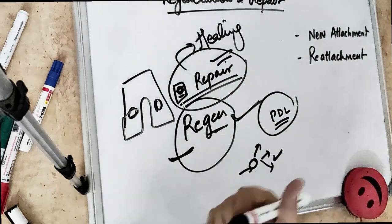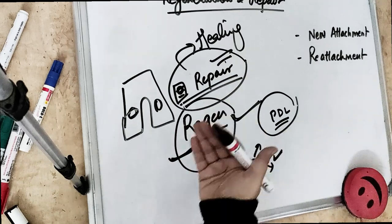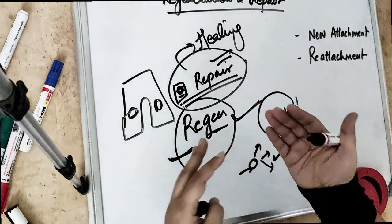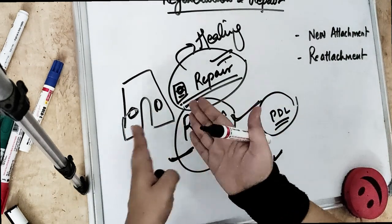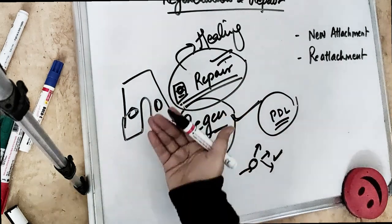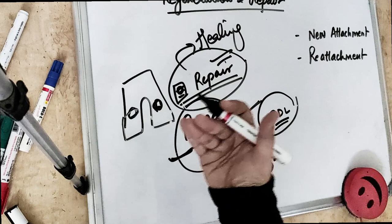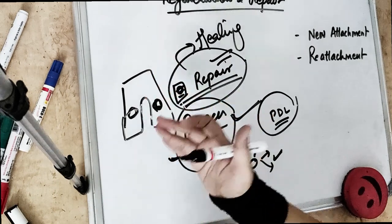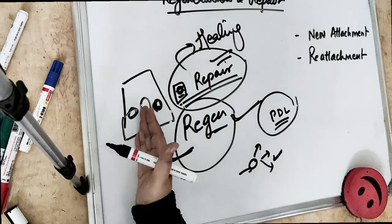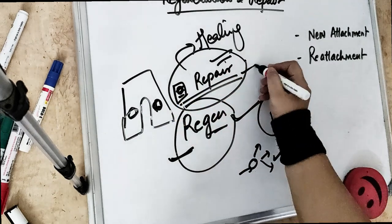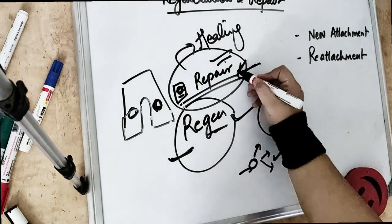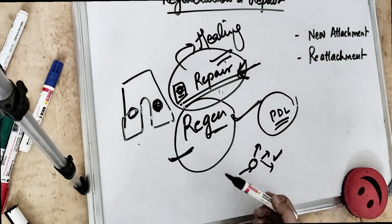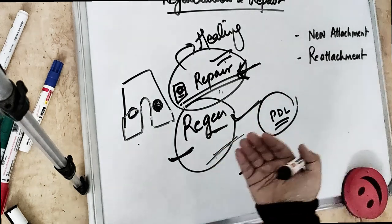Repair is restoring the continuity of the diseased structure - restoring the continuity of the diseased marginal gingiva and re-establishing a normal gingival sulcus. This repair exists on the diseased structure, on the defect. So repair is when we are healing this defect. Regeneration is reforming all of the tissues all over again.